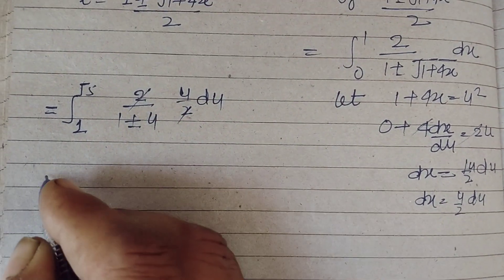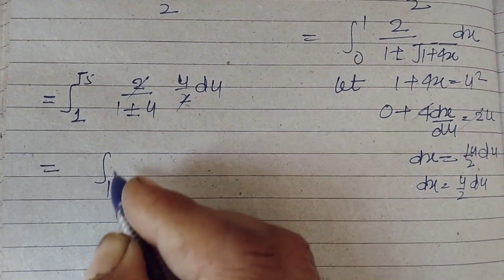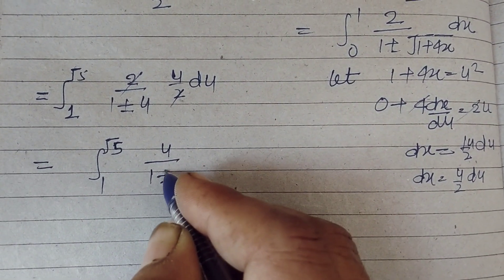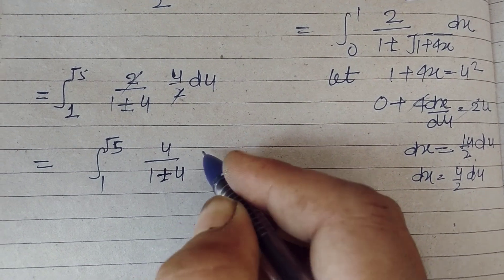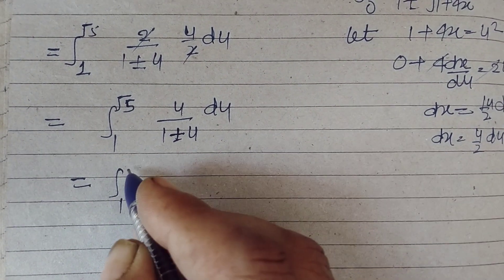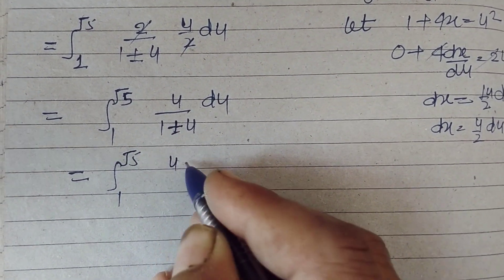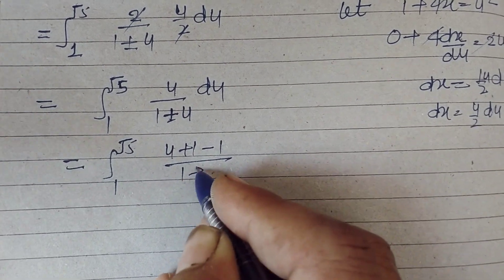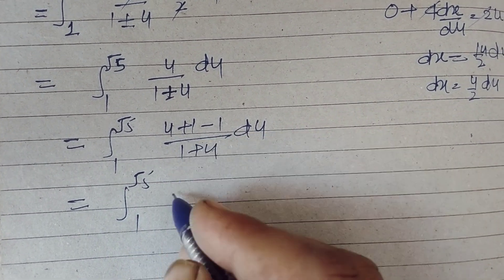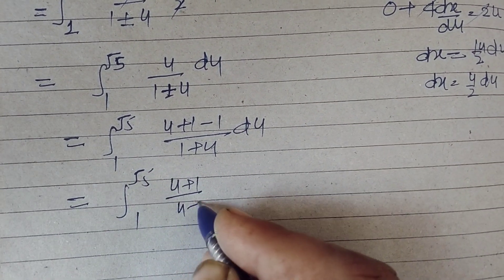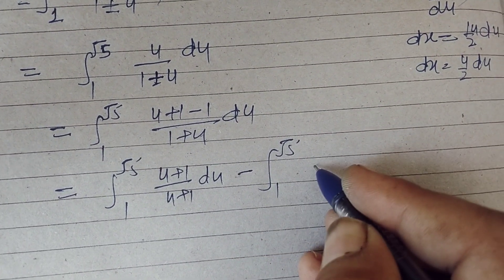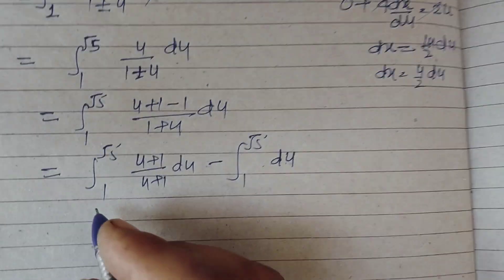We get integration one to root five, u upon one plus u du. We take the plus. Now again, one to root five, u can be written as u plus one minus one upon one plus u du. And this will be one to root five, u plus one upon u plus one du, minus one to root five, one upon one plus u du.